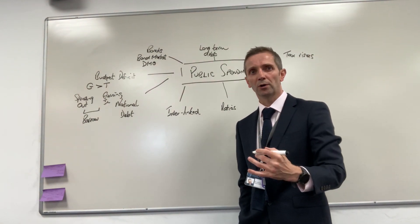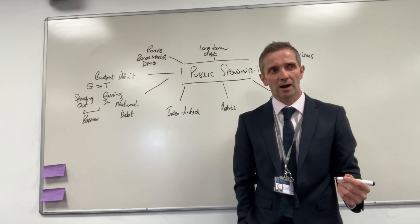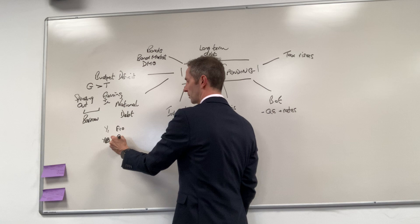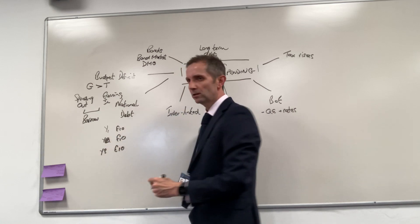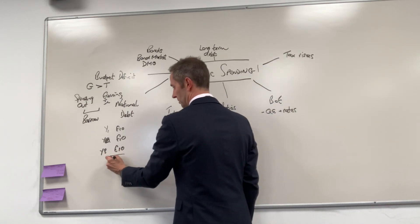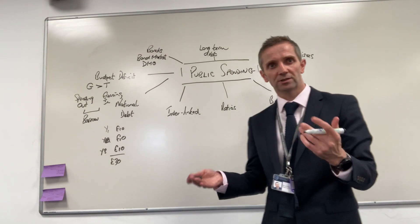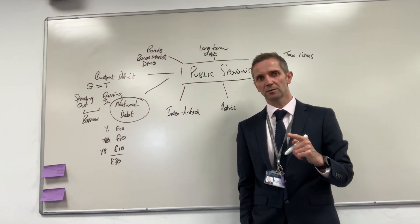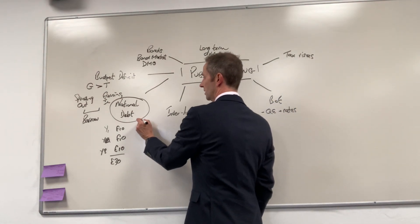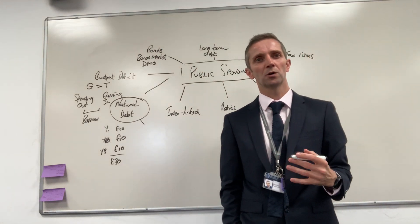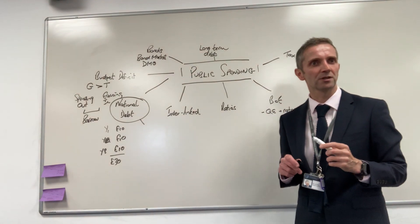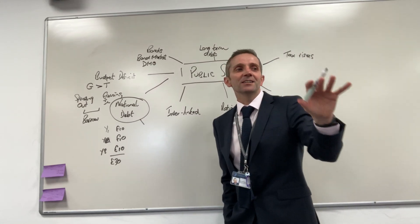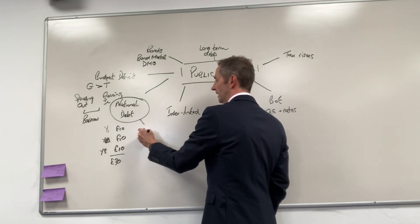Every time that the government borrows they're probably not paying any of the previous debt back. So if in year one they borrow 10 pounds, and then in year two they borrow another 10, and in year three they borrow another 10, well cumulatively by the end of that period they've borrowed 30 pounds. That cumulative debt is what's known as our national debt. Let's put a few figures and numbers to these. At the moment the national debt stands at about 2.3 ish trillion pounds.